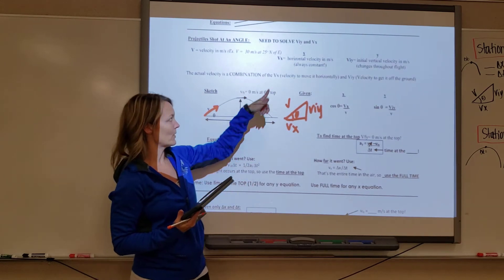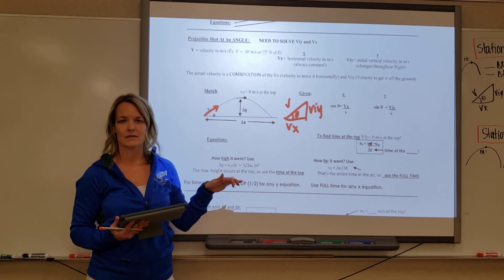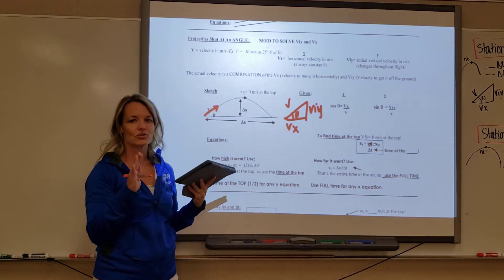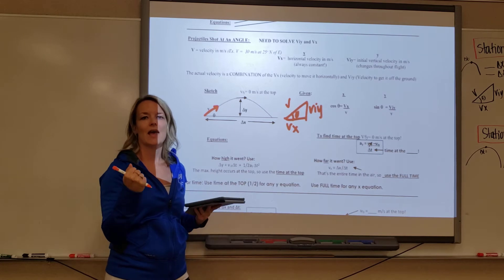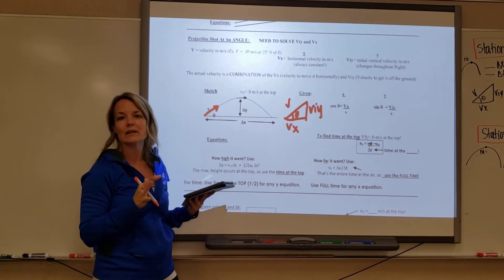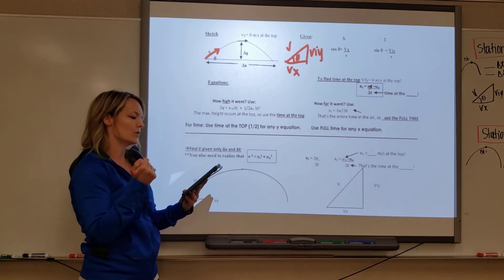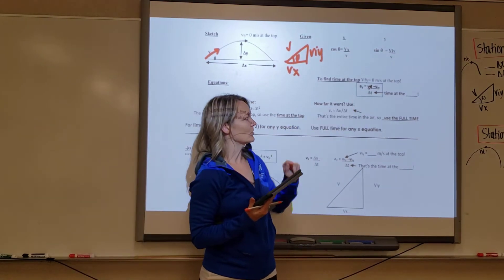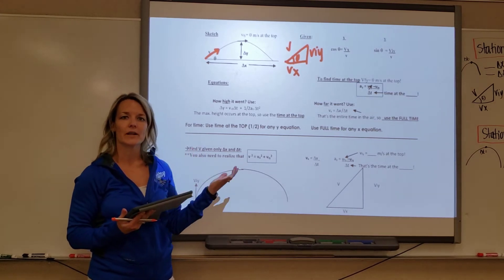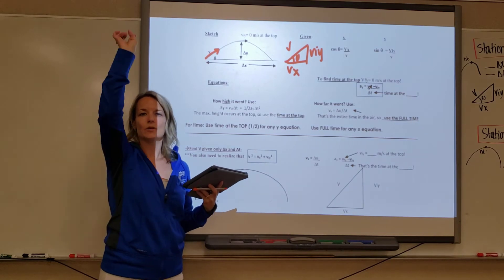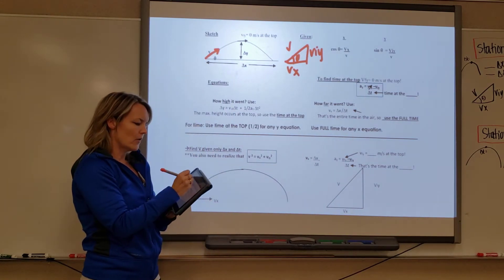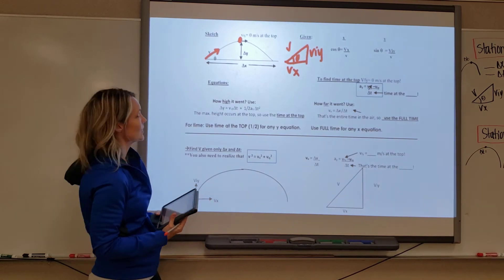From there, remember that v_x is always the same — it is constant the entire time; the minute you find it, it never changes. V_iy is the initial vertical velocity. In the y direction, as it goes up it slows down, hits a peak of zero at the top, and then the velocity increases as it comes back down. There is only one spot where one of the y velocities equals zero — when you throw something up, it hits zero at the peak. At the peak only, the final velocity in the y direction equals zero.